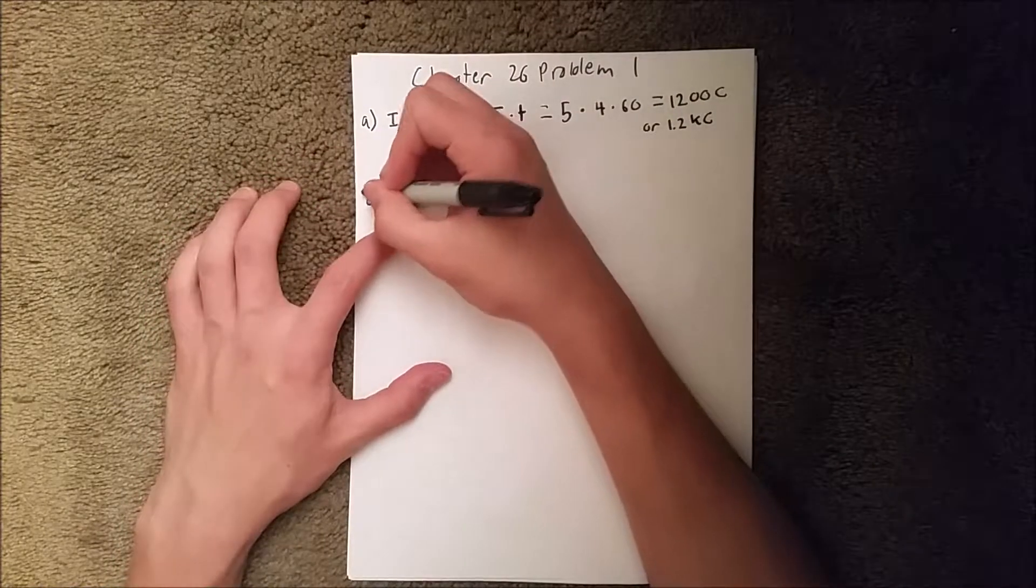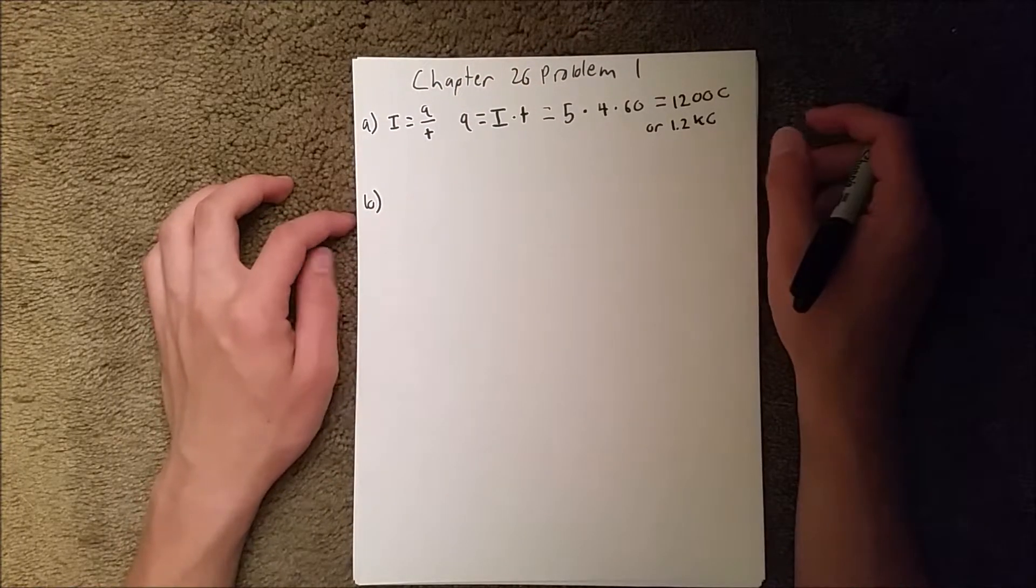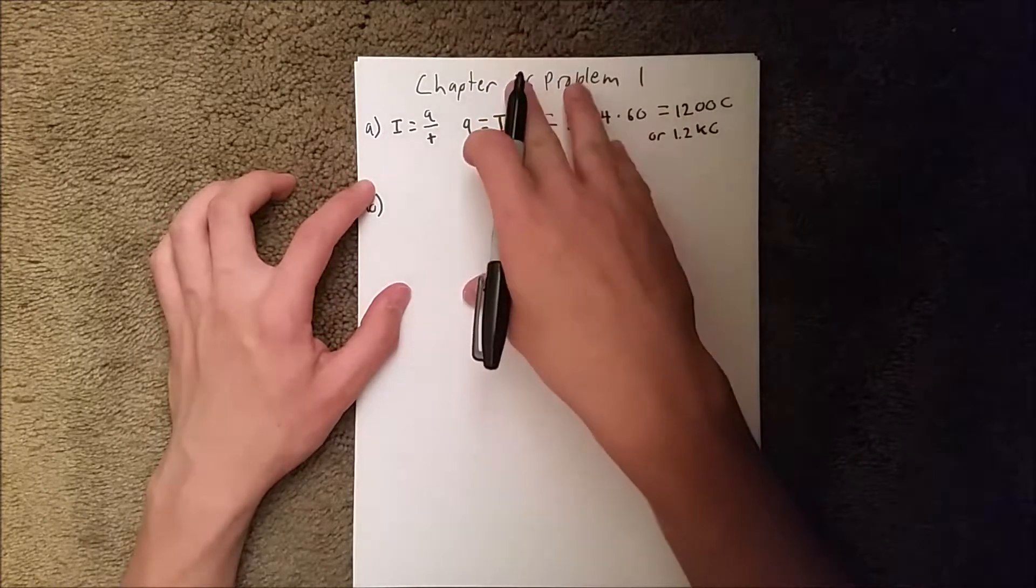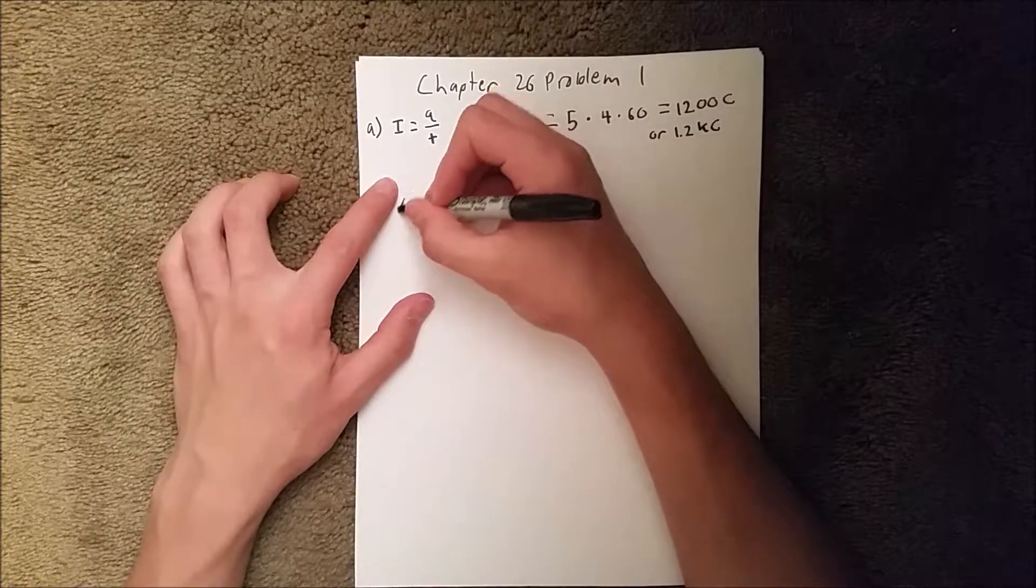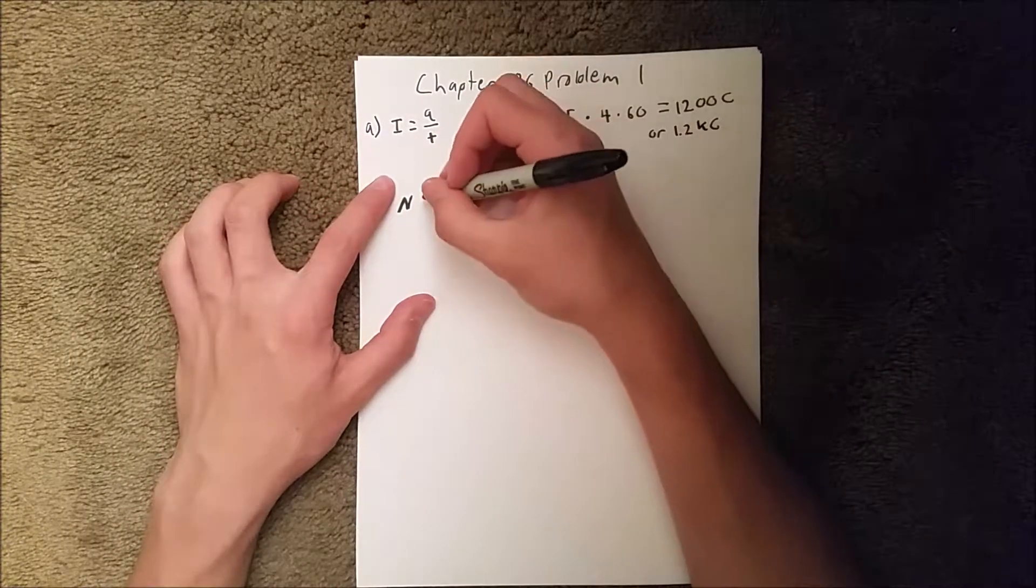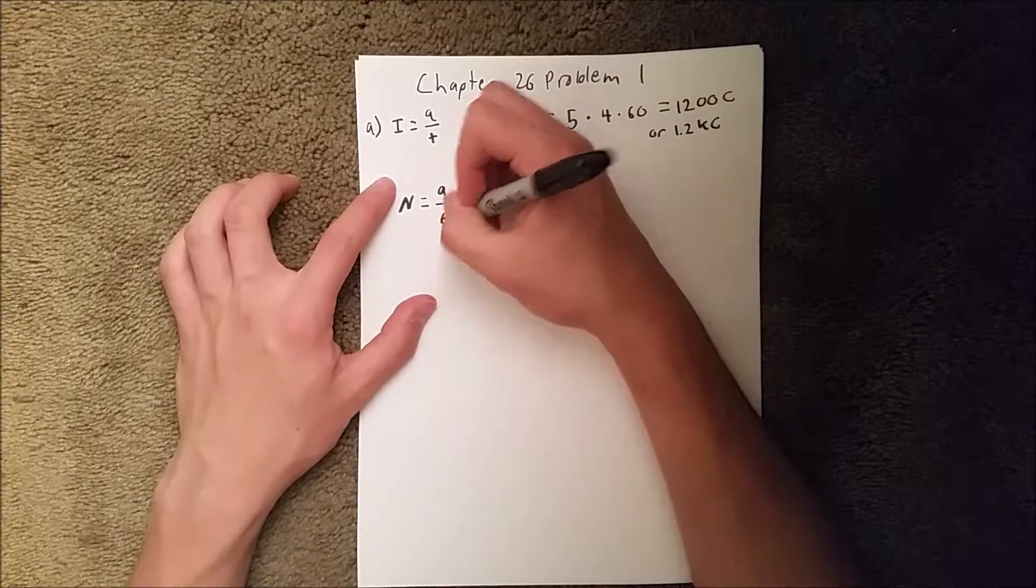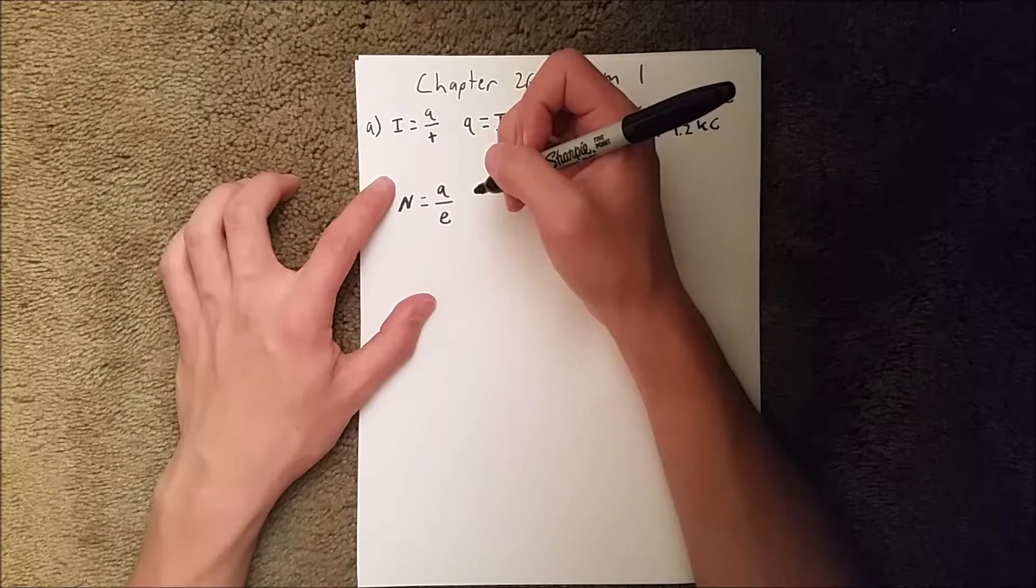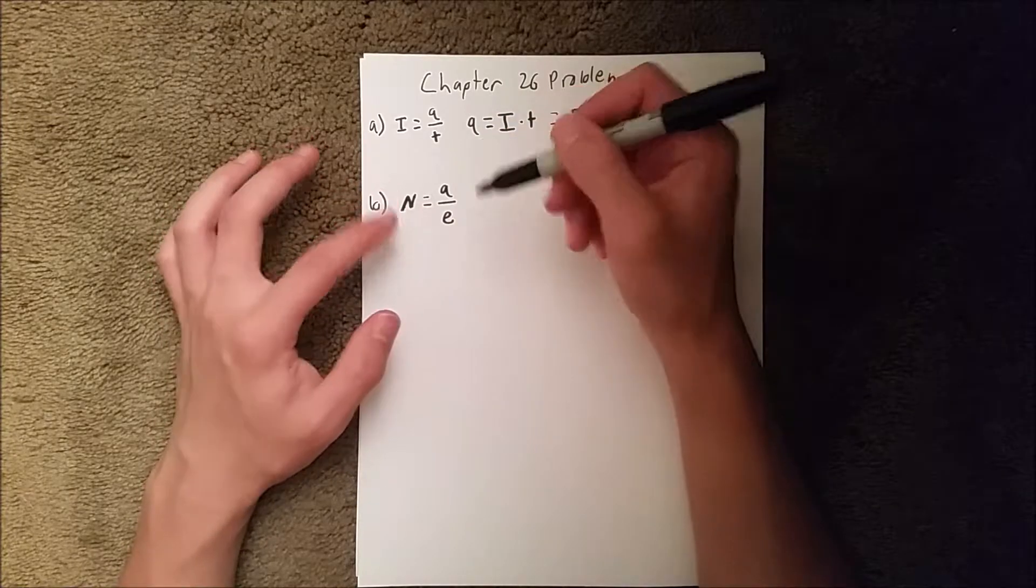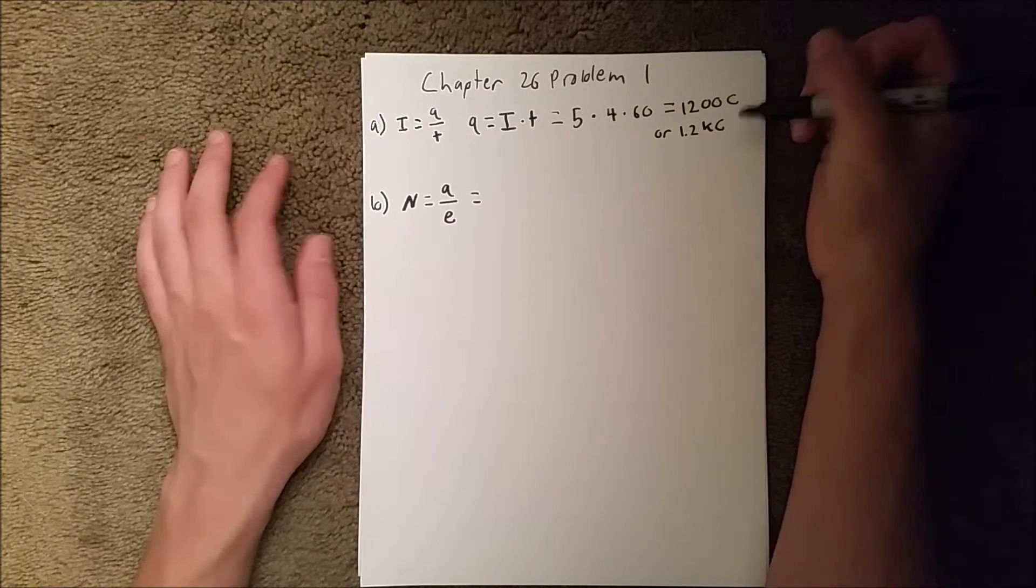And then for part B, we need to know how many electrons pass through the wire. We know that the number of electrons is charge per electron, so the total number of electrons equals charge divided by e. We got our charge up here.